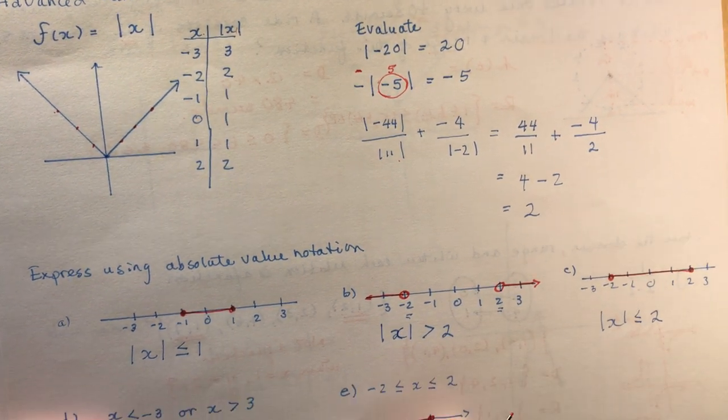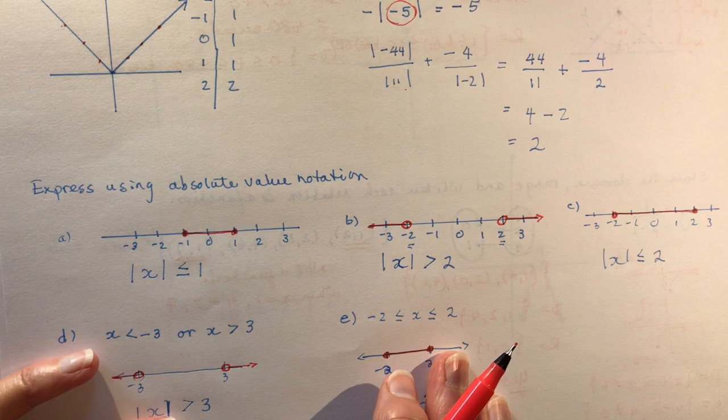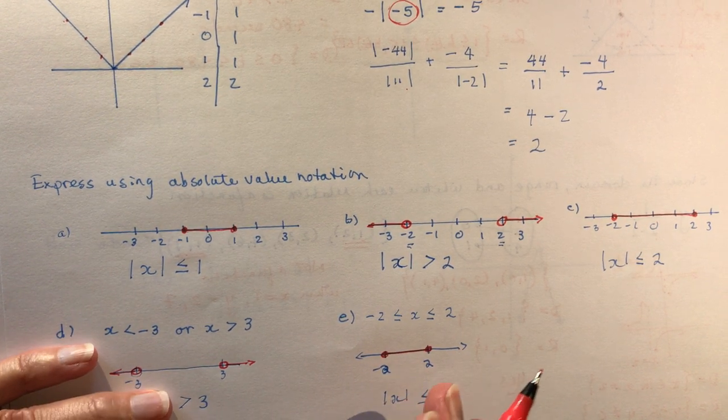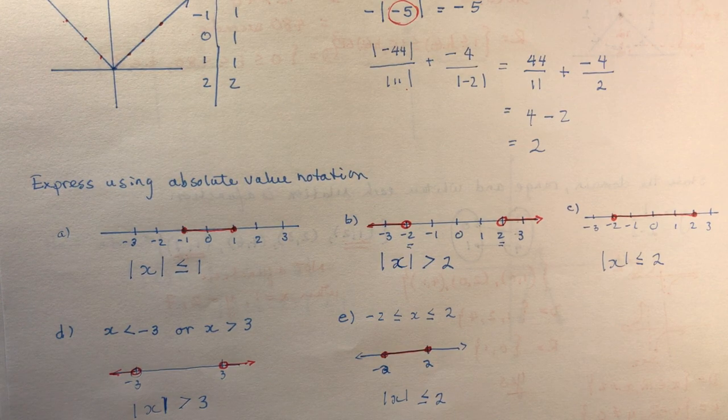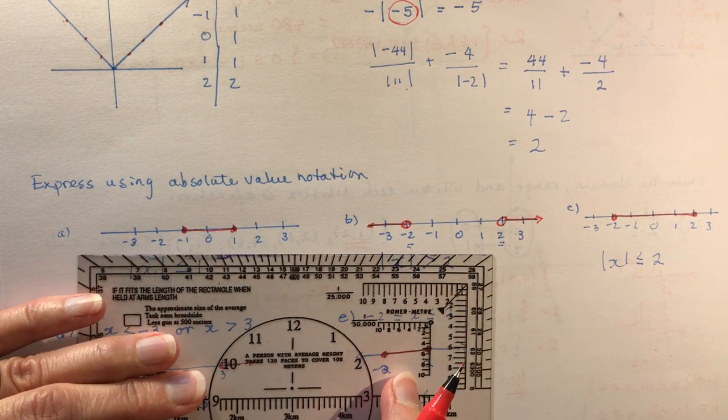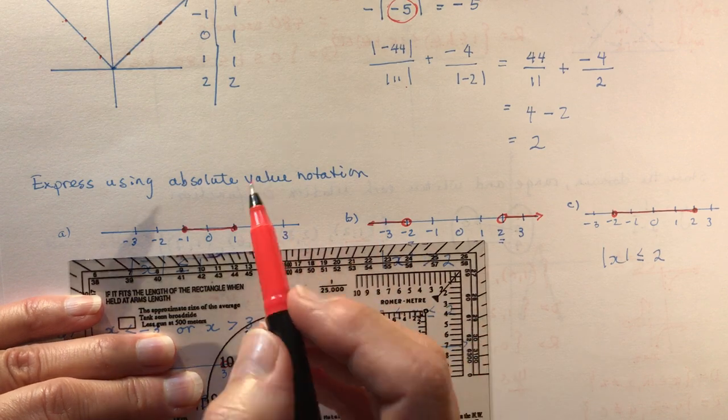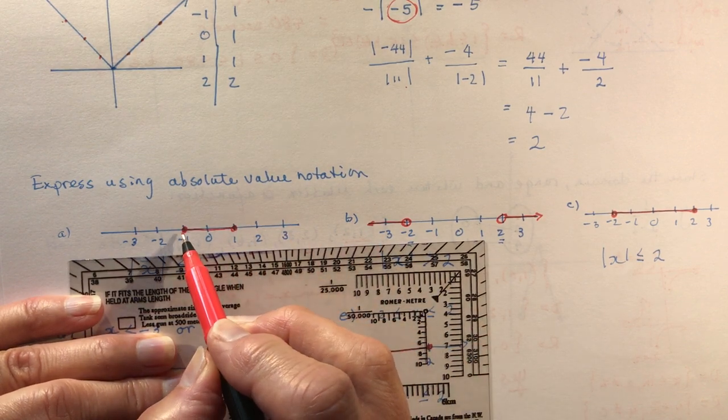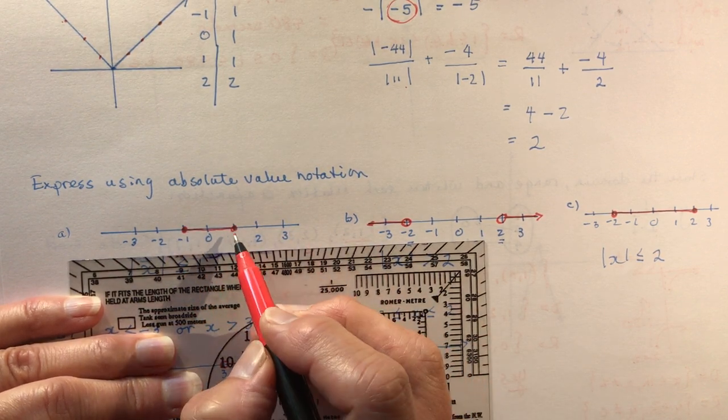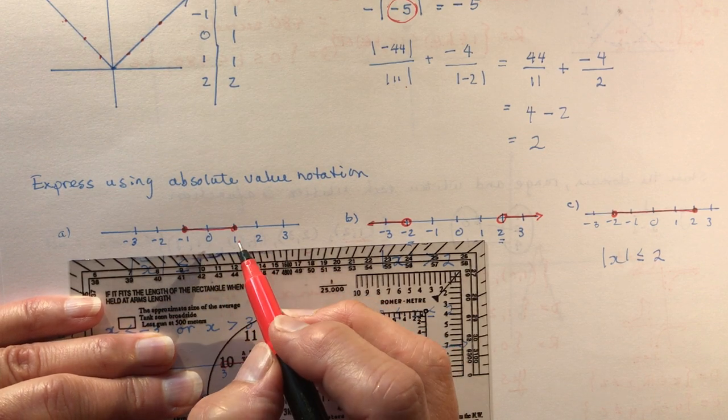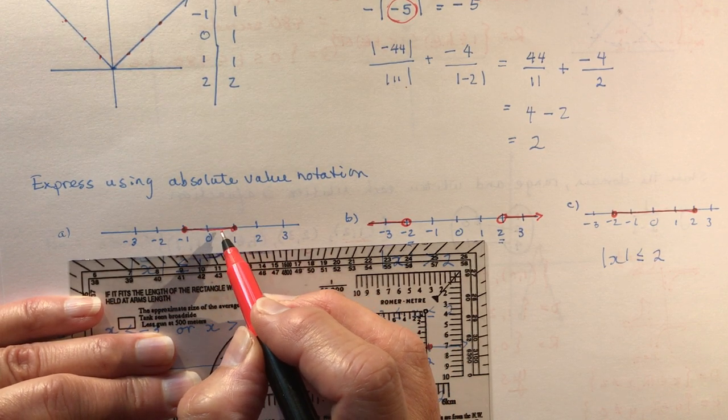Now the textbook also asks you to express using absolute value notation. So if you have a graph like this... I had an interrupted phone call when I was doing this and I had to start all over again. We're between minus one and one. If I want to know what the absolute value notation for that would be, I'd say well, it's less than one.